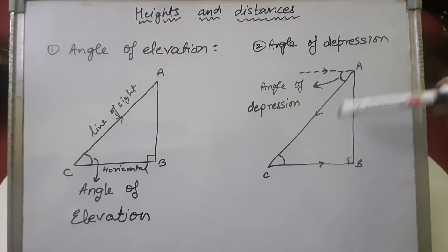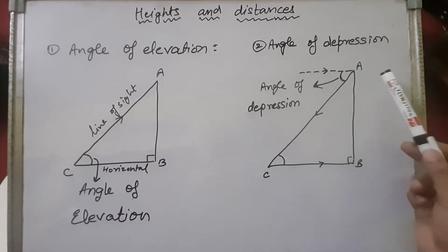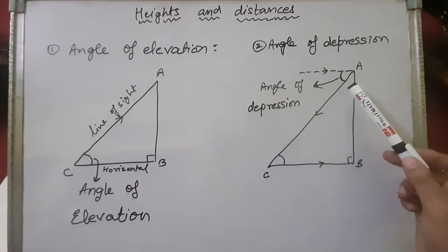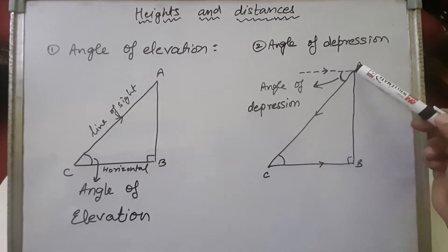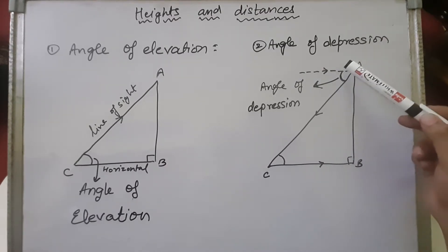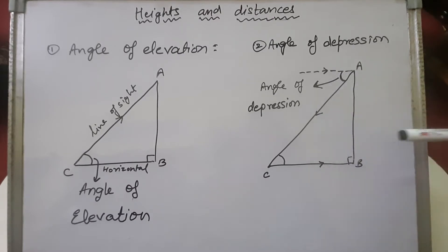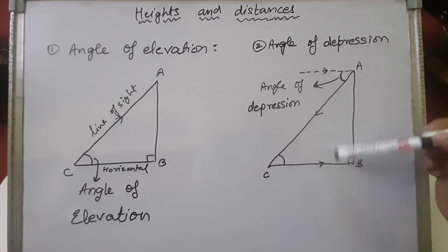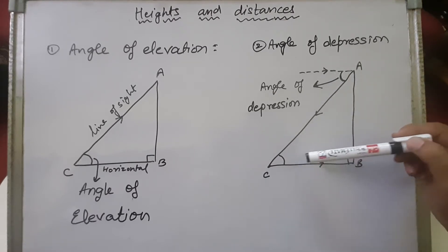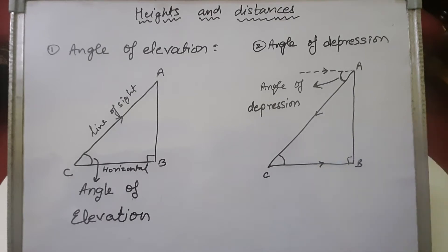Now let's discuss angle of depression. Suppose a person is standing at A at the top of the tower and sees some object at position C, so he will be looking downward. This will be the line of sight. If you draw the horizontal line at A, which is parallel to the base, the angle this line of sight makes with the horizontal is called the angle of depression. Since the tower is perpendicular to the surface, this angle is 90 degrees. When the two horizontal lines are parallel, the angle of depression and the angle of elevation are equal. Children, please note this down.